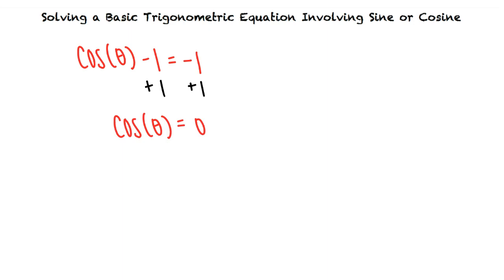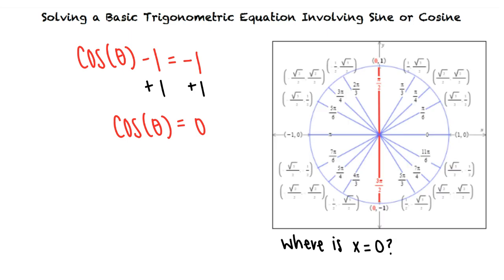This means we need to find the angle that gives us a cosine or x value of 0. If we take a look at our unit circle we see that in the interval from 0 to 2 pi there are exactly two angles that satisfy our equation.